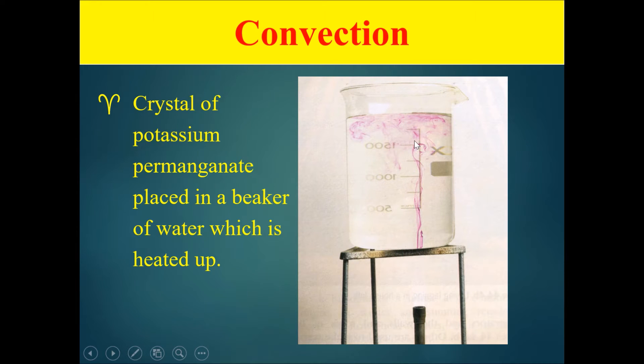Over here is an example of convection. If you put a crystal of potassium permanganate inside a beaker, the crystal will start to slowly melt. And if you put a Bunsen burner below to heat up the water around the potassium permanganate, you will see a stream of purple flowing upwards and then spreading out among the top.